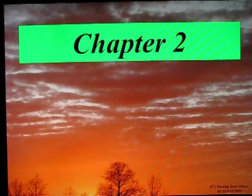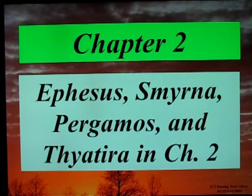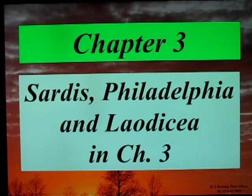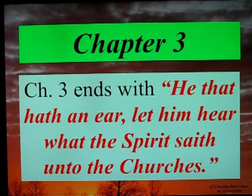Chapter 2 begins the message to the seven churches: Ephesus, Smyrna, Pergamos, and Thyatira in Chapter 2, and in Chapter 3: Sardis, Philadelphia, and Laodicea. Chapter 3 ends with, 'He that hath an ear to hear, let him hear what the Spirit saith unto the churches.'